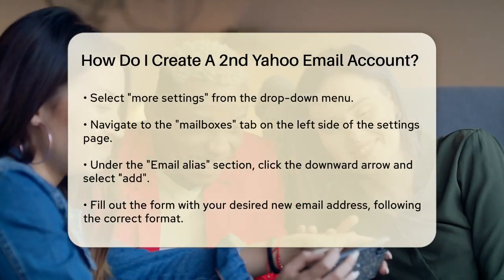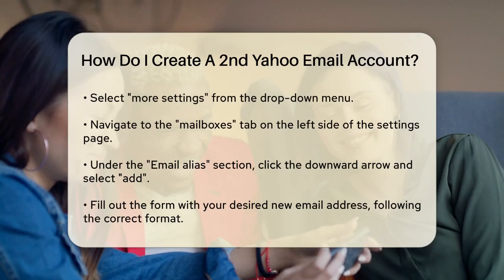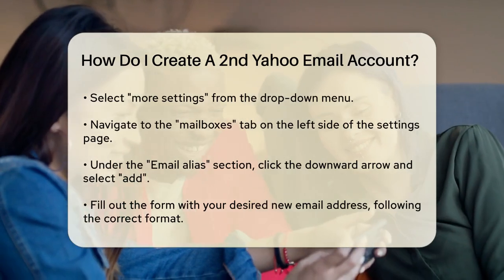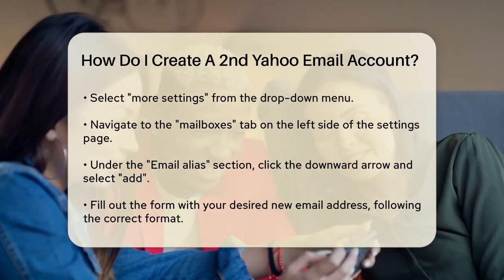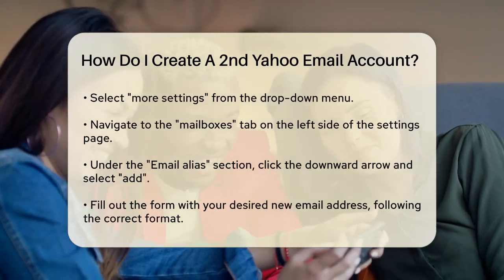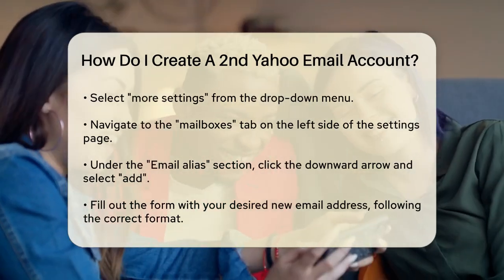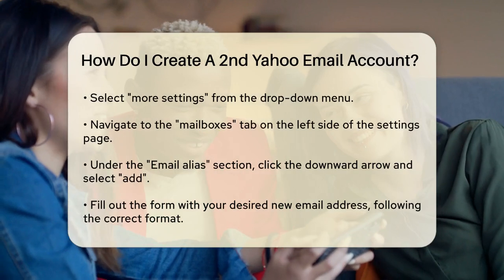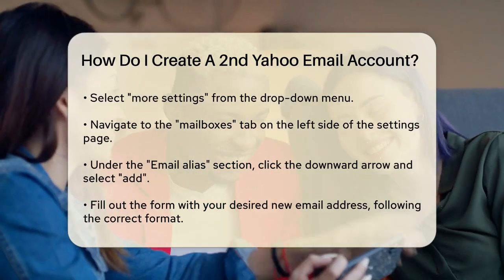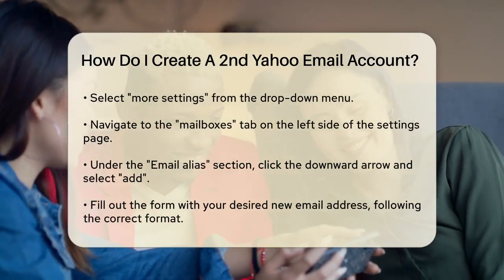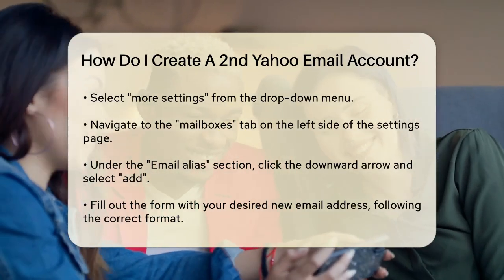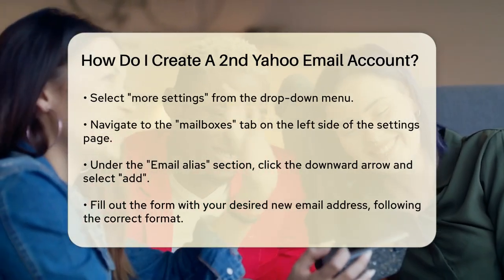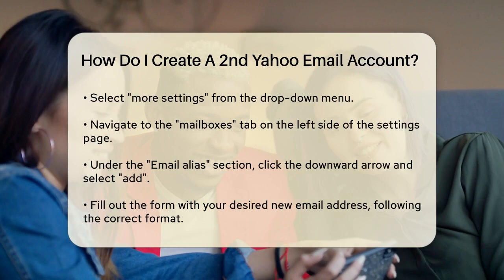In the Settings page, navigate to the Mailboxes tab on the left side. Here, you'll find the Email Alias heading. Click the downward arrow icon to the right of this heading, and then choose Add below it.